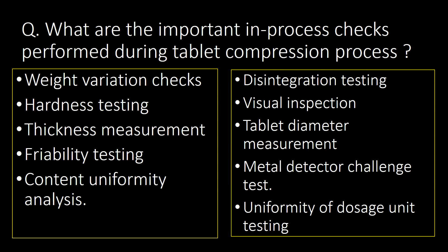Welcome. We will start with a very basic question and then go into detail. First question: what are the important in-process checks performed during tablet compression? Here is the list of 10 important in-process checks: first, weight variation check; second, hardness testing; third, thickness measurement; fourth, friability testing; fifth, content uniformity analysis; sixth, disintegration testing; seventh, visual inspection of tablets; eighth, tablet diameter measurement; ninth, metal detector challenge test; and tenth, uniformity of dosage unit testing.